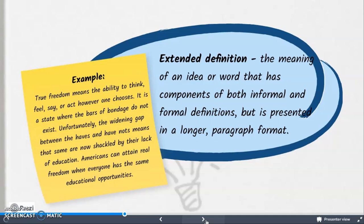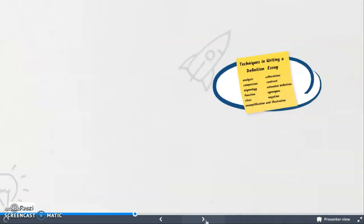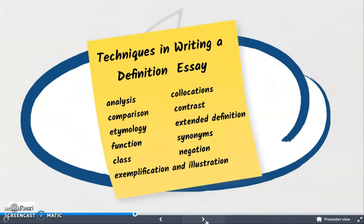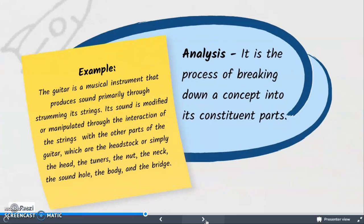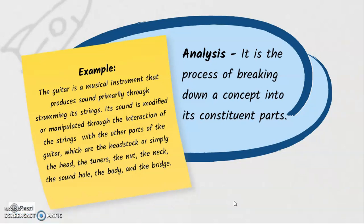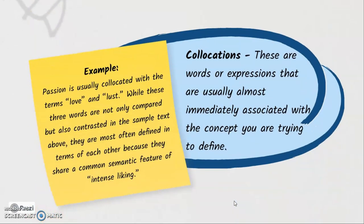Aside from the different types of definition, we also have to understand the different techniques in writing a definition essay. The first technique is analysis — it is the process of breaking down a concept into its constituent parts. For example, the term 'guitar' is explained by identifying its constituent parts. Now let's move on to the next technique, which is collocations.